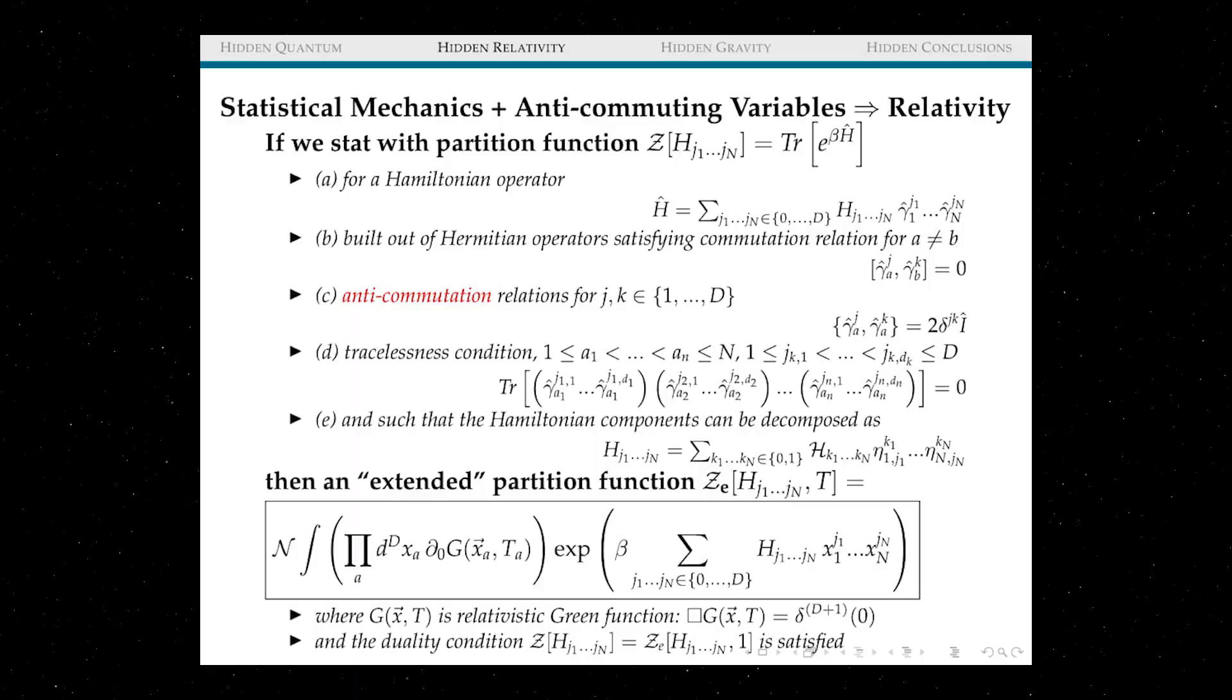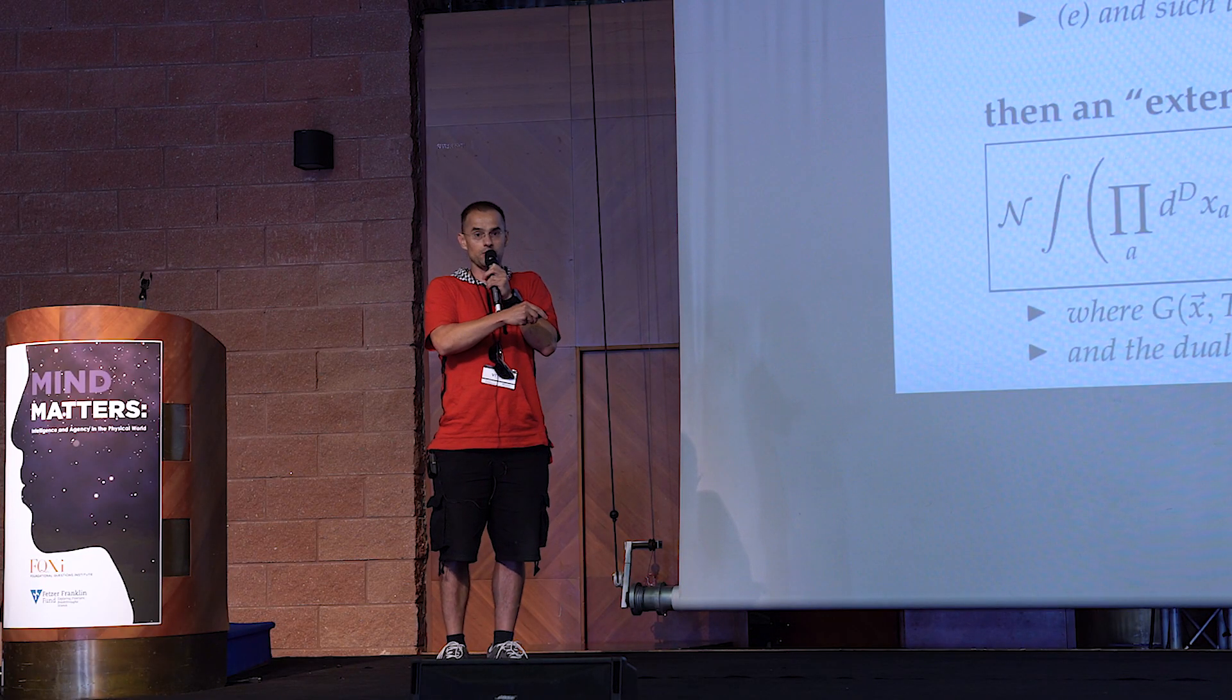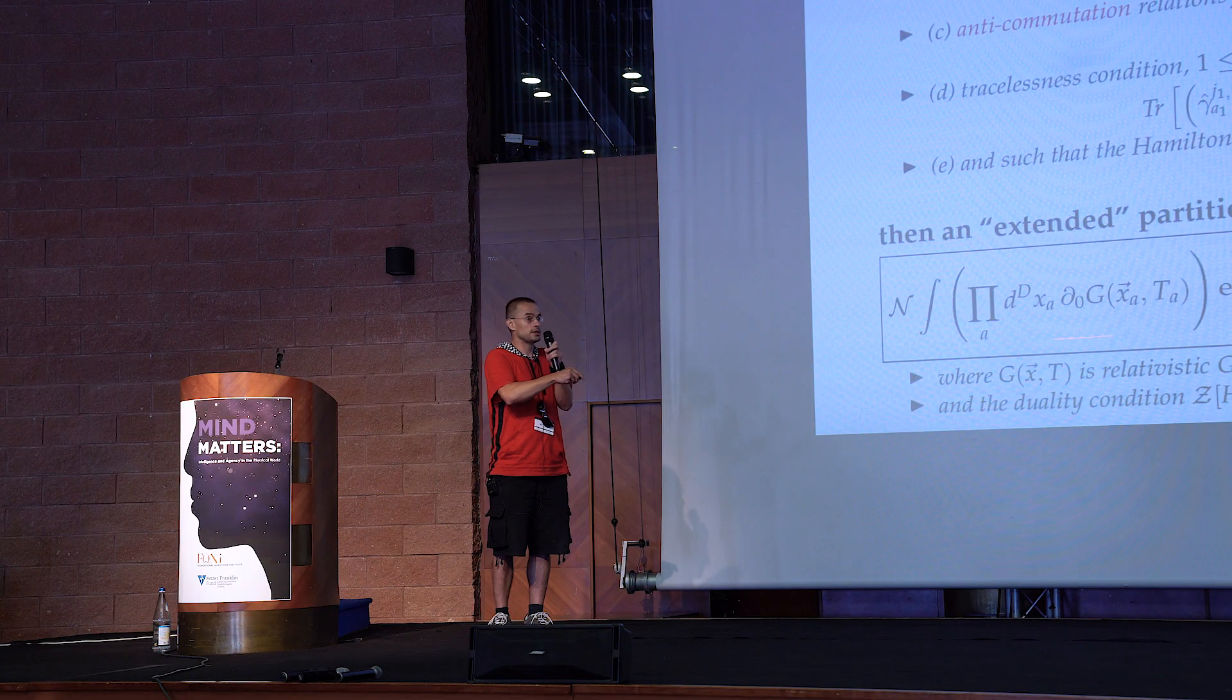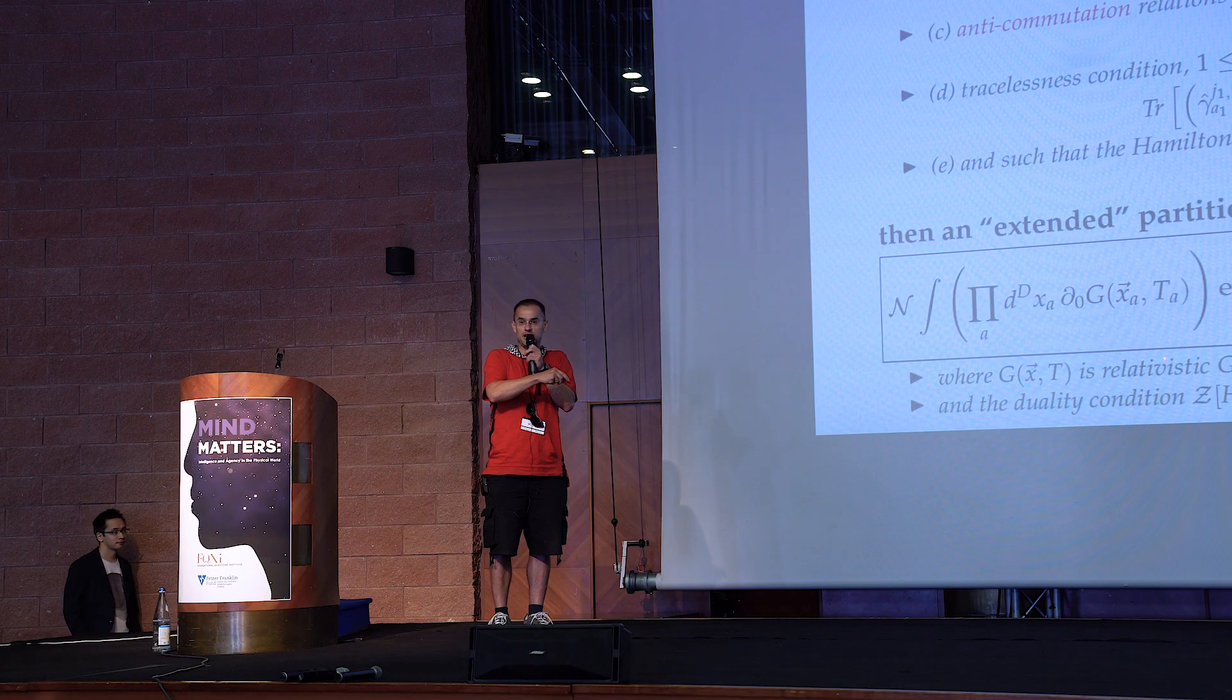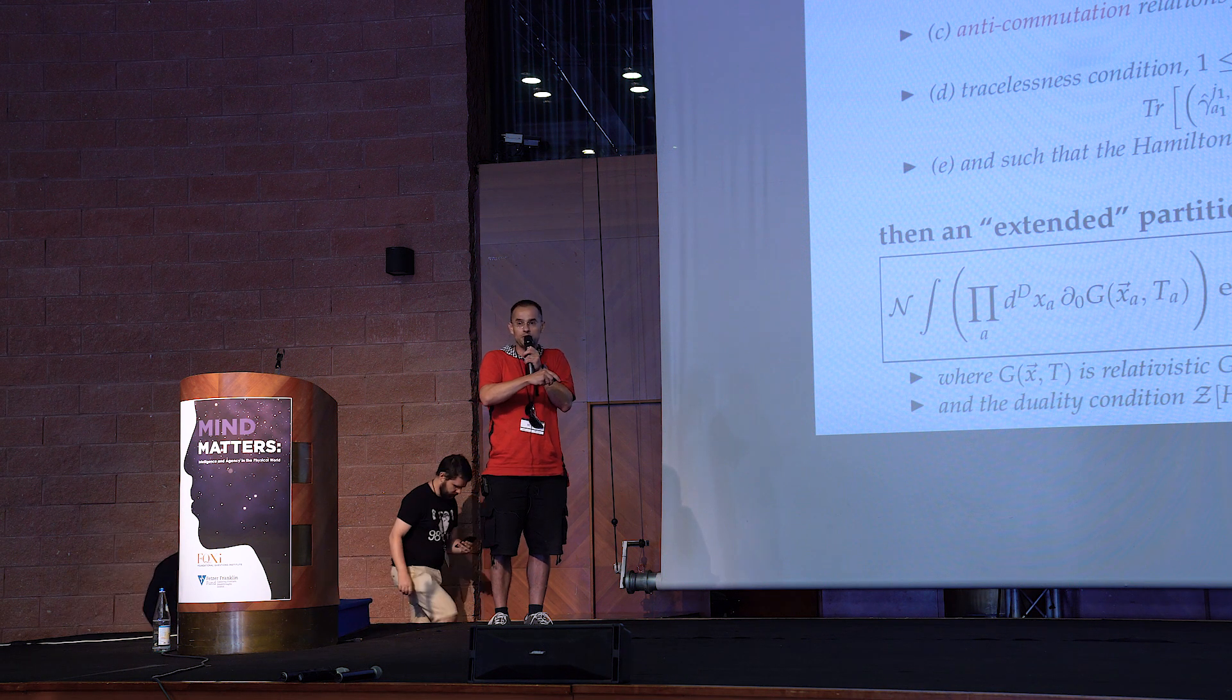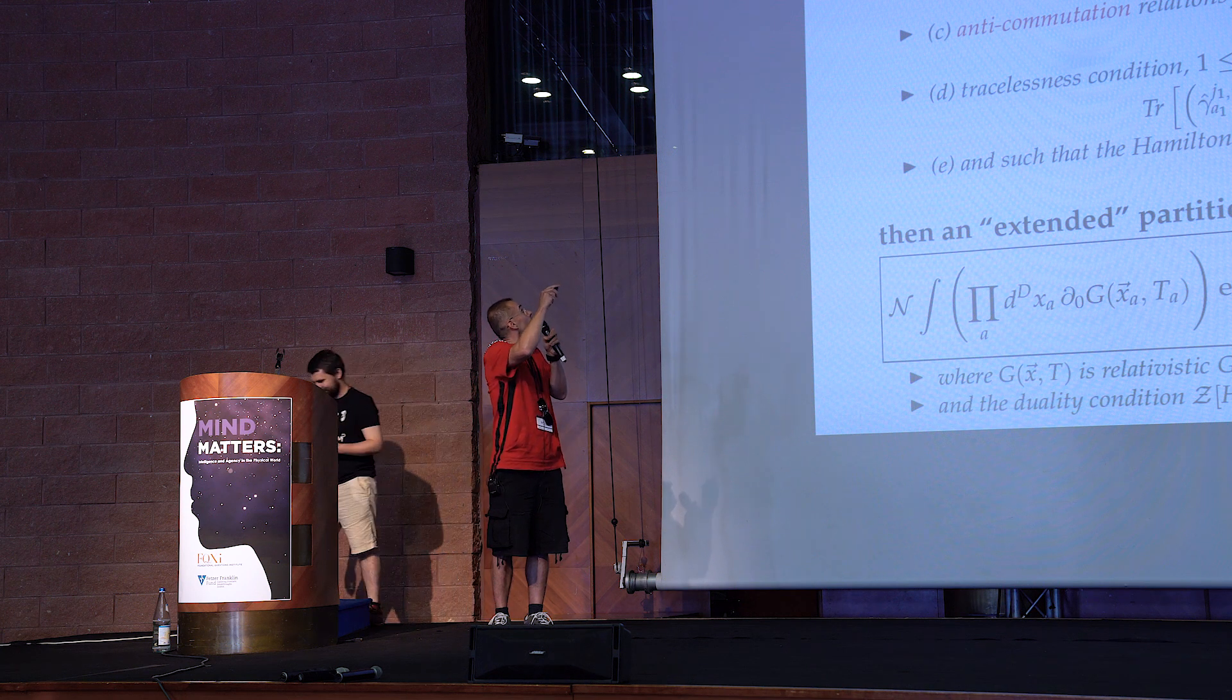Okay, and now you can ask all right, this is just special relativity, there is no general relativity built in in this formula. How can you get metric which is dynamical which satisfies Einstein equation?